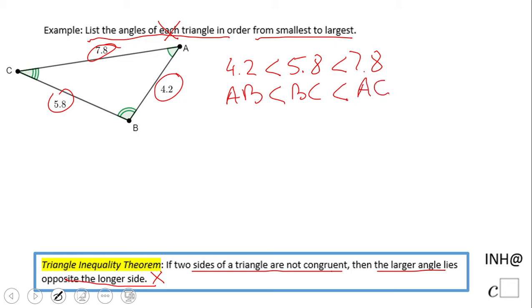As I said, AB is this side, the opposite will be angle C. So the measure of angle C will be less than what? BC is the opposite of angle A, the measure of A. And obviously the last one, the measure of angle B.